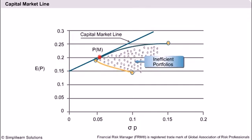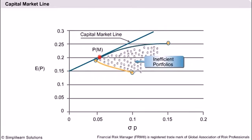The equation signifies that the return increases by the amount of the slope for each unit increase in risk, that is, standard deviation σ. Hence, the slope is the sensitivity of the portfolio return with respect to the risk taken by the investor. Higher risk implies higher return along the capital market line. Now let us discuss the various types of risks, and then introduce the important concept of beta, which is the measure of risk with respect to the market.